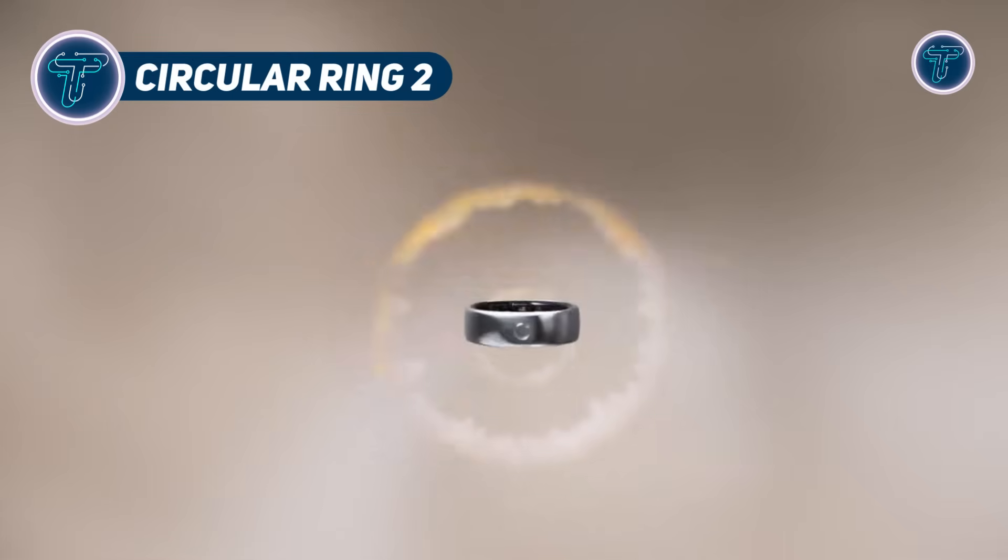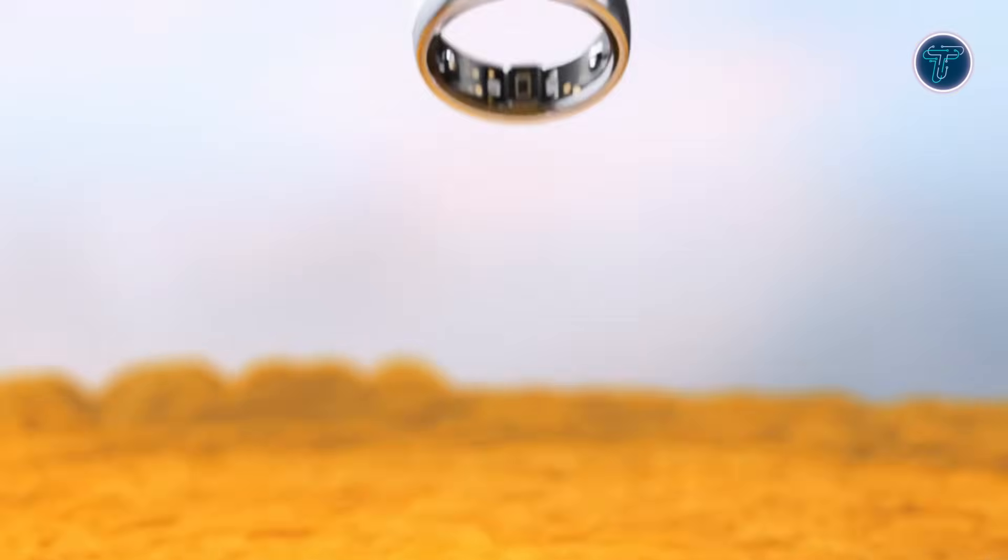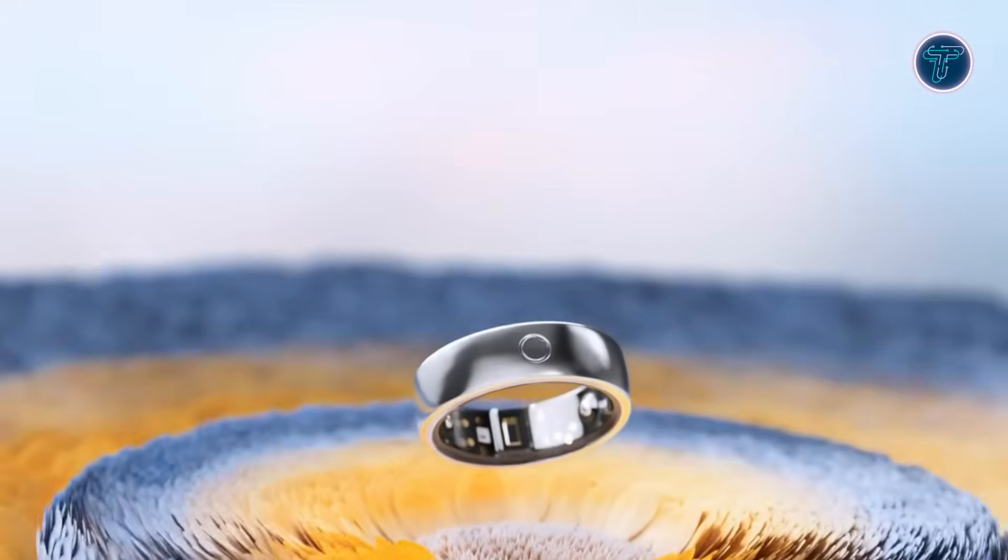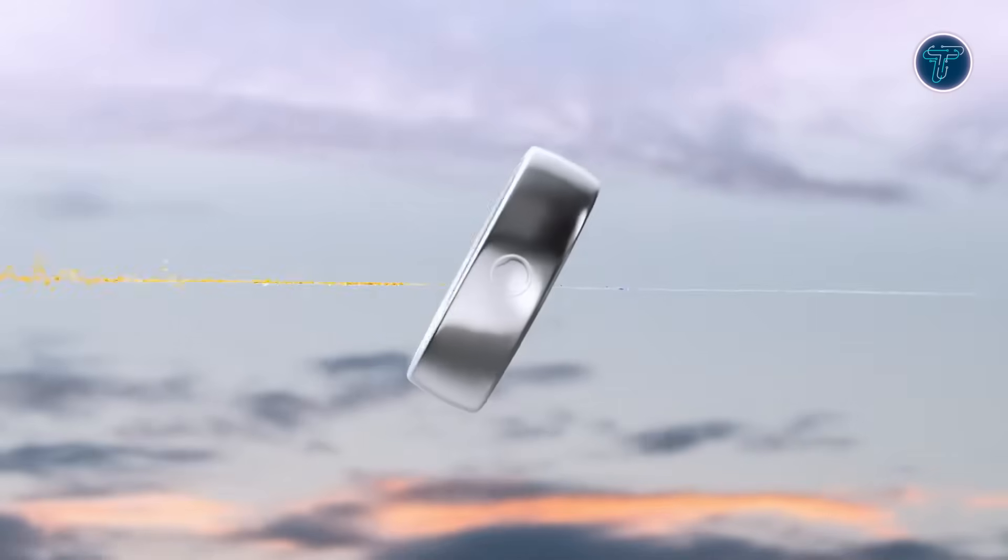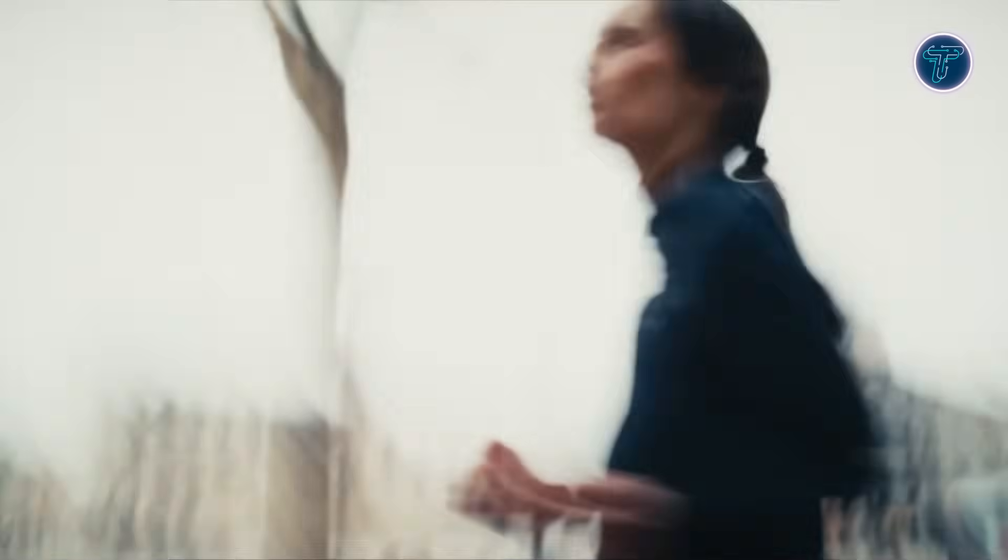Circular Ring 2. The Circular Ring 2 brings advanced health technology into a sleek, wearable design. At its core is an FDA-cleared, single-lead ECG sensor that provides clinical-grade heart monitoring, capable of detecting conditions like atrial fibrillation. Paired with PPG sensors, it tracks heart rate, heart rate variability, blood oxygen, skin temperature, and respiratory rate at regular 2-minute intervals.